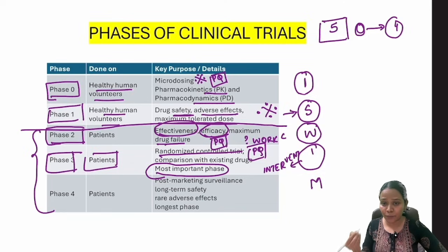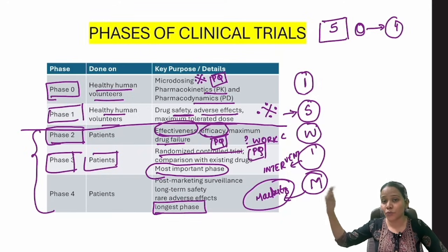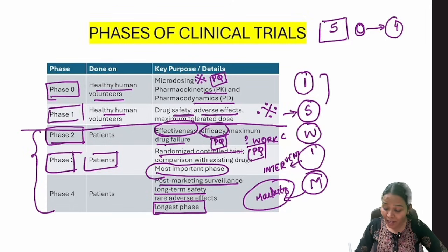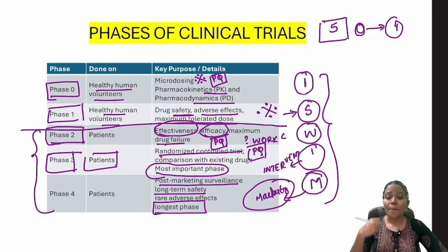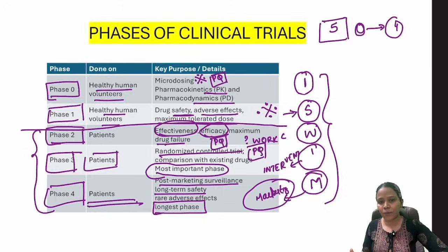The fourth phase corresponds to 'M' in I SWIM — 'M' for Marketing, which is post-marketing surveillance. This is the longest phase; it can continue for 15, 20, or 25 years. You are looking at long-term safety and rare adverse effects. Post-marketing surveillance is Phase 4, done in all patients taking that drug. Don't confuse it with Phase 5 — remember it's I SWIM, so M is the fifth letter but corresponds to Phase 4.